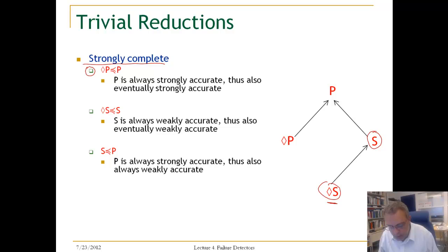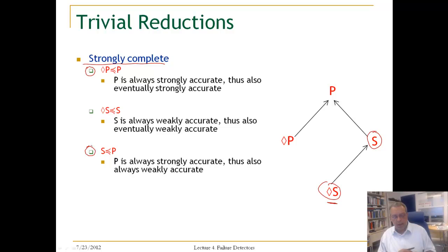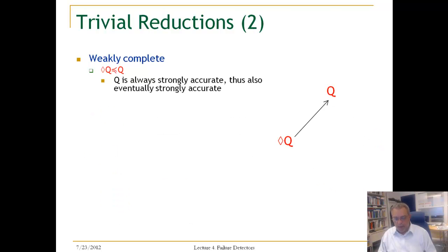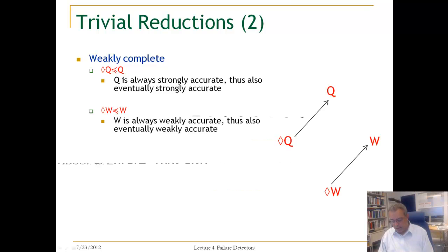We also know that if we have P, we can implement a strong failure detector because P is always strongly accurate and therefore also weakly accurate. In the same manner, ◇S is reducible to P. We can look at the weakly complete failure detectors in the same way and get the same hierarchy.